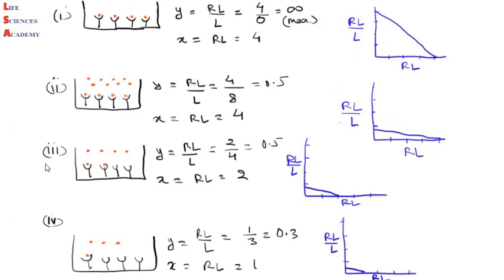Now let us discuss the Scatchard plot for receptors with low binding affinity for their ligand. In case number three, there are six ligand molecules but due to the low affinity of the receptor, only two form the receptor-ligand complex and four remain in solution, giving y equal to 0.5 and the value of RL on the x-axis is 2 — the slope is quite low. In another example, only one ligand has bound to the receptor and three are present in the soluble form, giving a y-axis value of 0.33 and x-axis value of 1, giving a very low slope. So if the receptor has low affinity for its ligand, the slope will remain low, always less than 1.